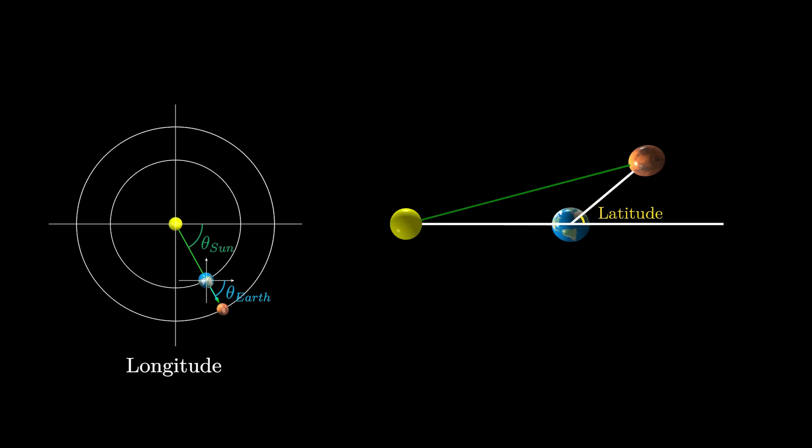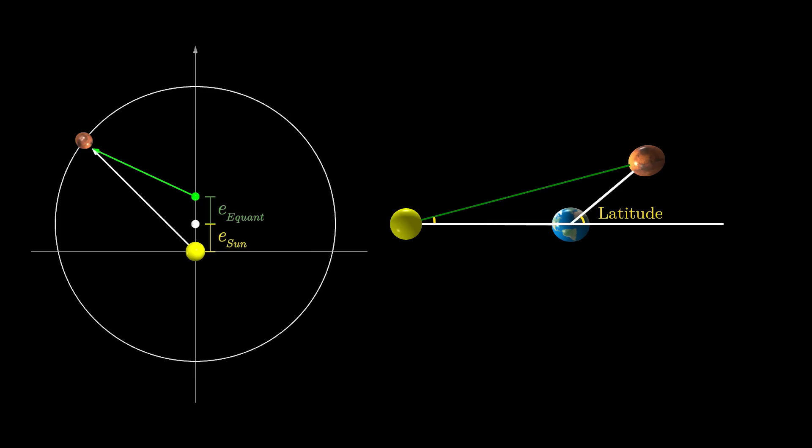Unlike Mars' longitude values, Kepler could not assume that Mars' latitude values were the same as seen from the Earth and the Sun. Kepler realized that he could use this fact to check the distance he had initially computed between the Sun and the center of Mars' orbit.